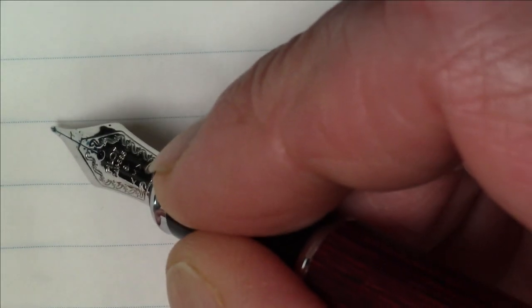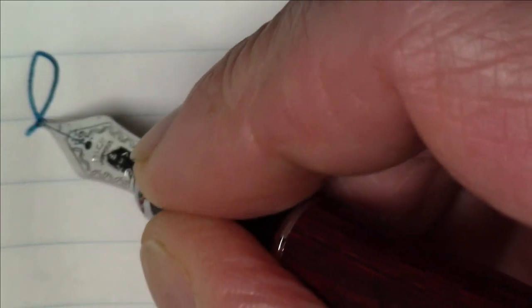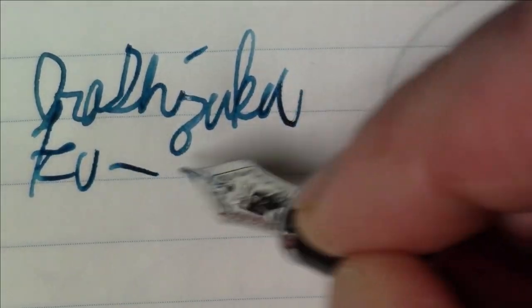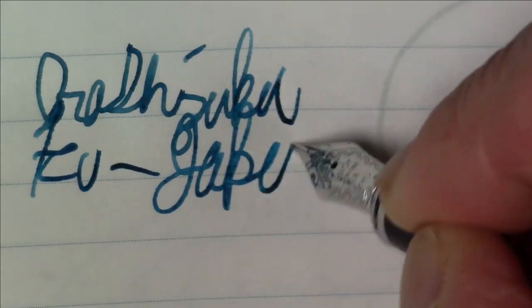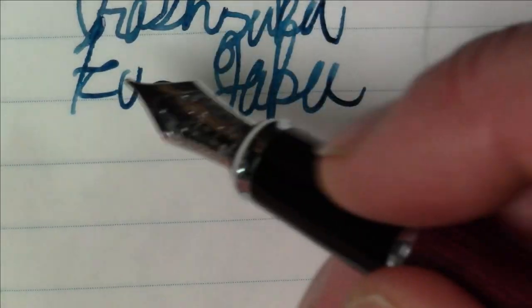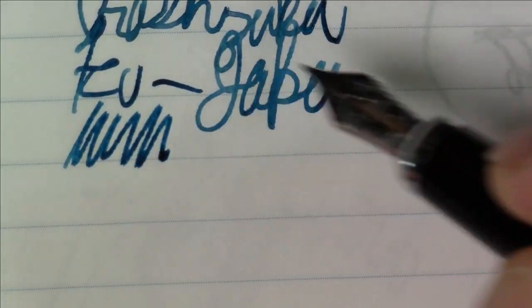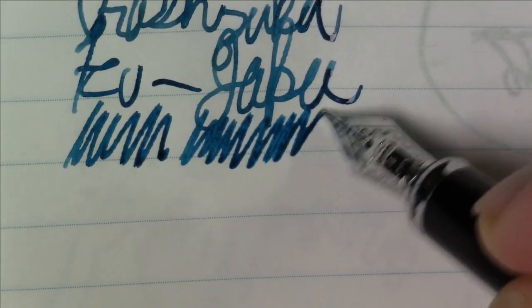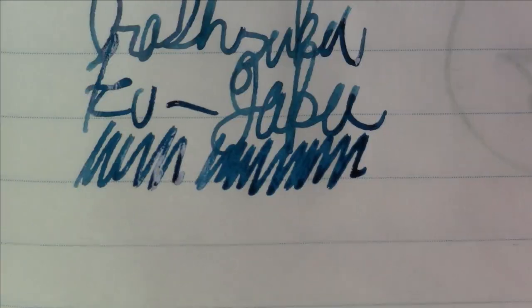All right, folks. So as we said, this ink is Iroshizuku Ku-jaku. And again, nice looking ink. Definitely picks up some shading and variation on this Tomoe River paper, which looks great. Definitely a pretty color. I like it quite a bit.